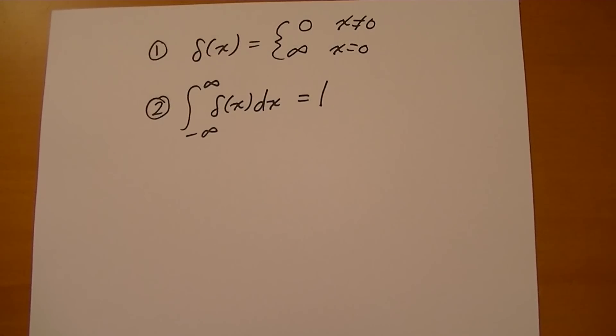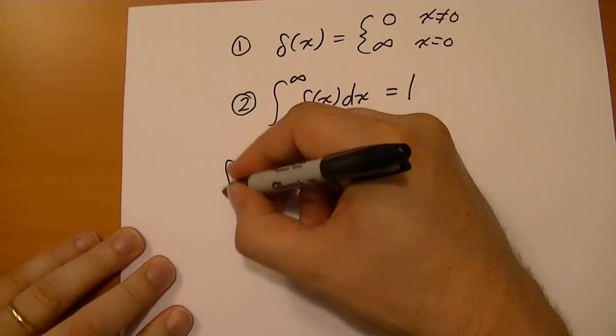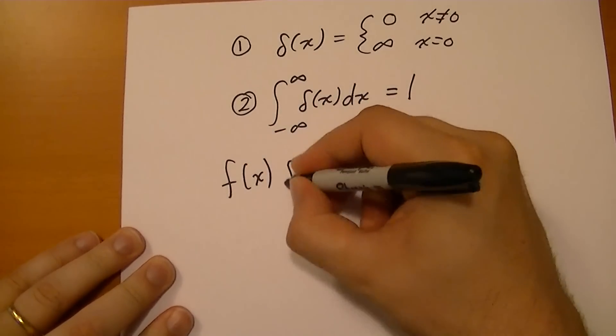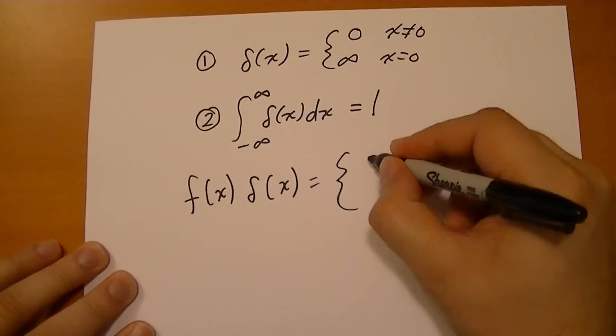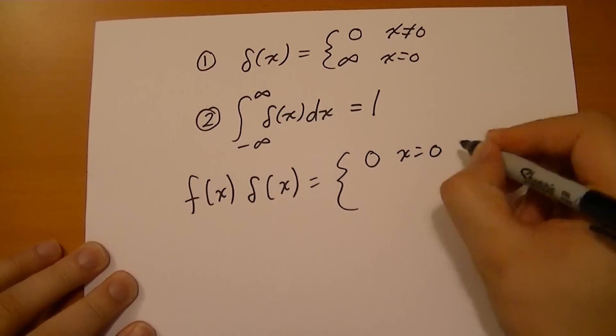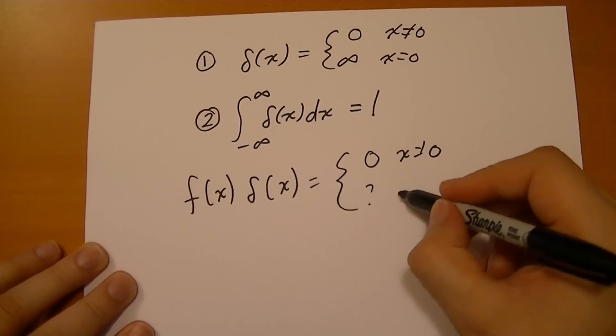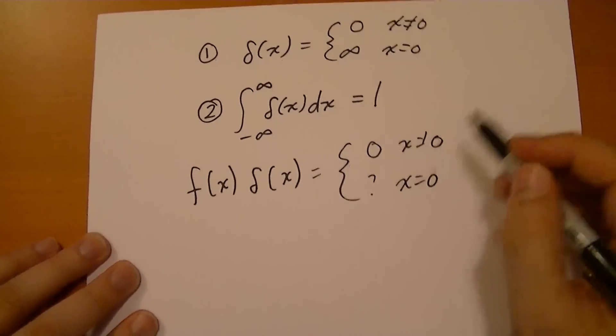But one of the interesting properties of the Dirac delta function is if you take a normal function and multiply it by the Dirac delta function, then that's going to be equal to zero where x is not equal to zero. And it's going to be equal to something where x is equal to zero.